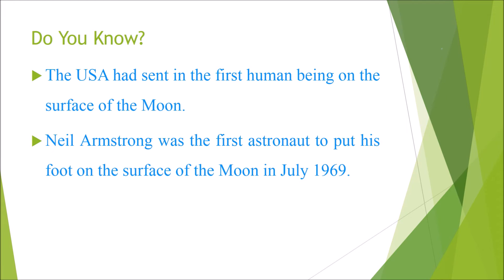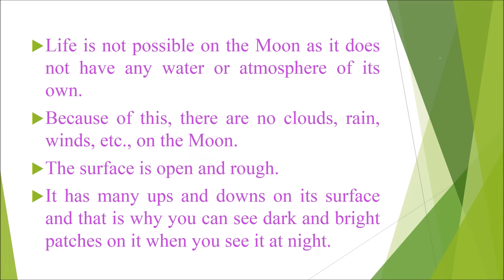The moon has no light of its own but appears to shine because it reflects the light of the sun falling on it. The USA sent the first human being to the surface of the moon — Neil Armstrong was the first astronaut to put his foot on the surface of the moon in July 1969. Life is not possible on the moon as it does not have any water or atmosphere of its own, which means there are no clouds, rain or winds. The surface is open and rough, with many ups and downs, which is why you can see dark and bright patches on it at night.